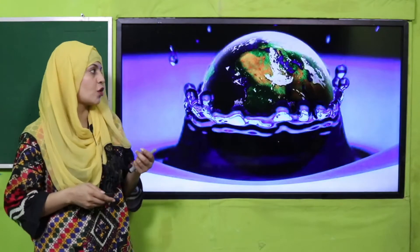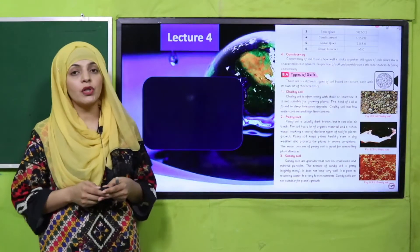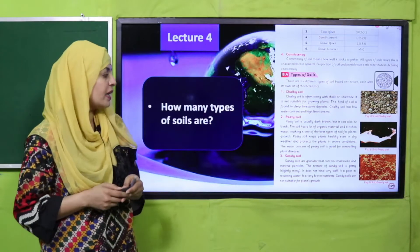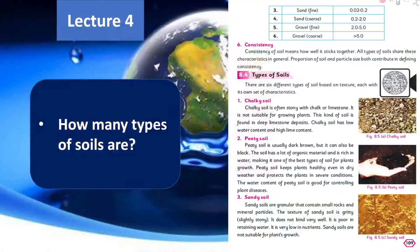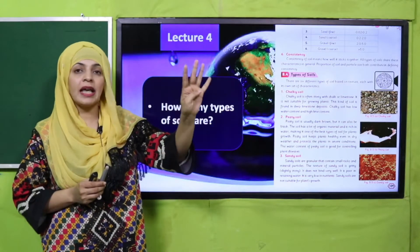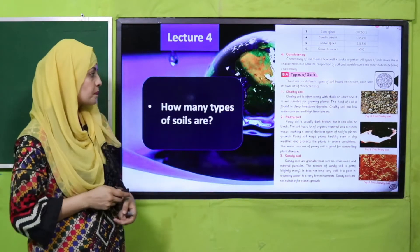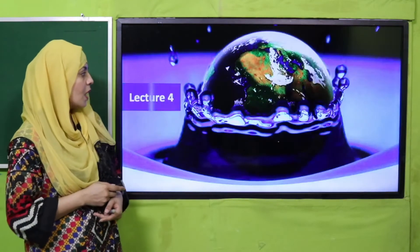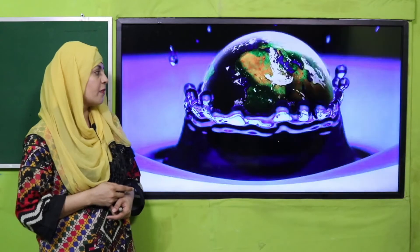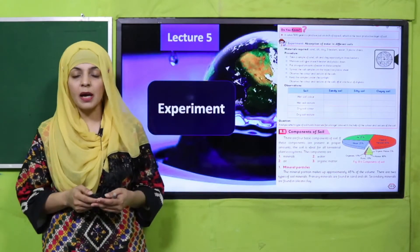In lecture number four we discussed about the types of soil. How many types of soil are there? There are six different types of soil: chalky soil, sandy soil, silty soil, clay soil, loamy soil, and the sixth one is peat soil.